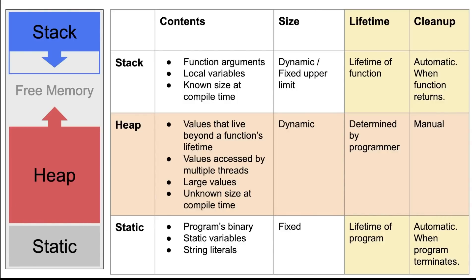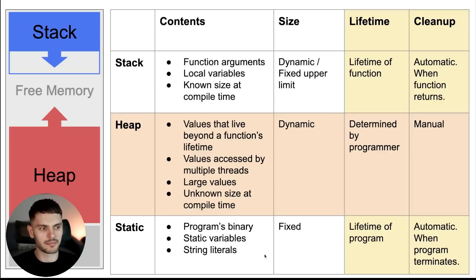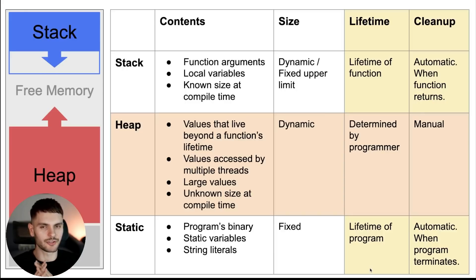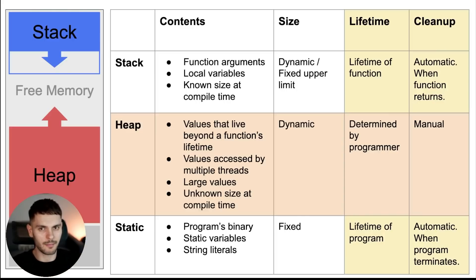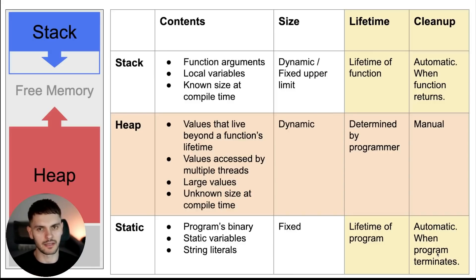First, let's look at the static region. The static region stores your program's binary instructions, static variables, and in Rust, string literals. It has a fixed size that's known at compile time. The values in the static region have a lifetime equal to the lifetime of the program — and by lifetime, I mean how long the values live. Values are created when your program starts up and destroyed when your program ends. Cleanup is automatic: when the program terminates, all values in the static region are cleaned up.